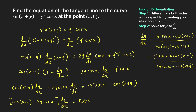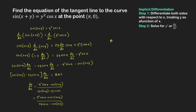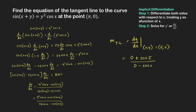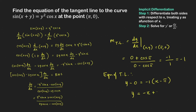Now we find the equation of the tangent line. The slope is the value of the derivative at the point x, y equal to pi comma 0. Substituting, the numerator is 0 plus cosine of pi, and the denominator is 0 minus cosine of pi, giving negative 1 over negative of negative 1, which equals negative 1. Using point-slope form, y minus 0 equals negative 1 times x minus pi, which gives y equal to negative x plus pi. This is the equation of the tangent line at the point pi comma 0.